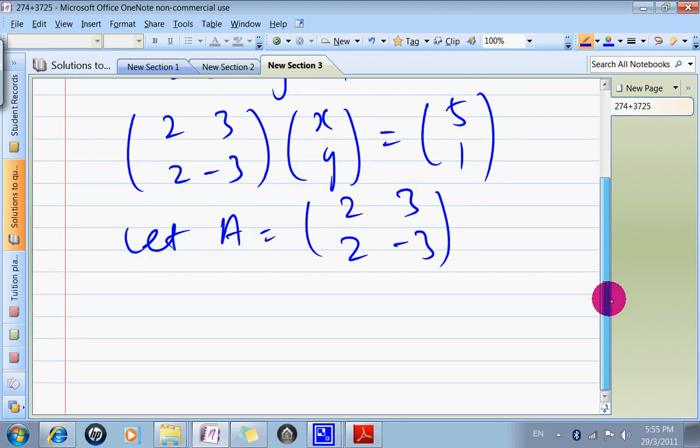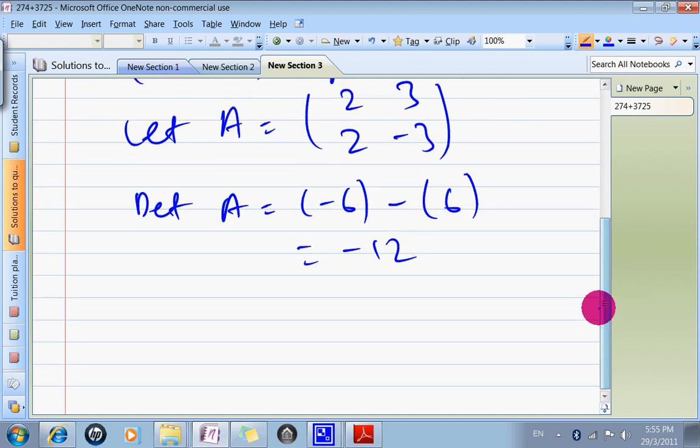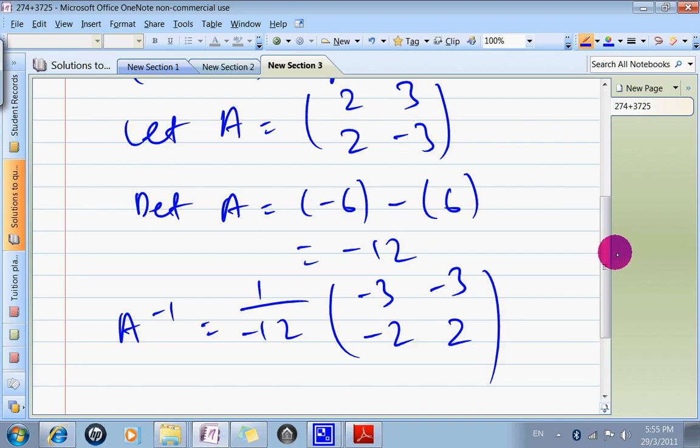We've got to find the A inverse. Determinant of A equals 2 times negative 3, so negative 6, minus 2 times 3, so minus 6, so it's negative 12. So A inverse equals 1 over the determinant. Switch the two numbers around, add negative to these two numbers. So that's an A inverse.